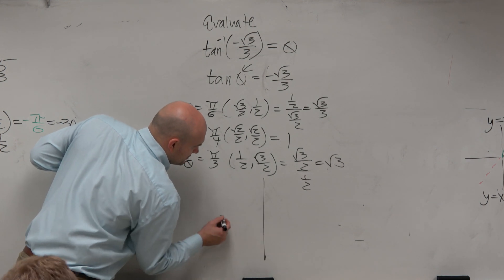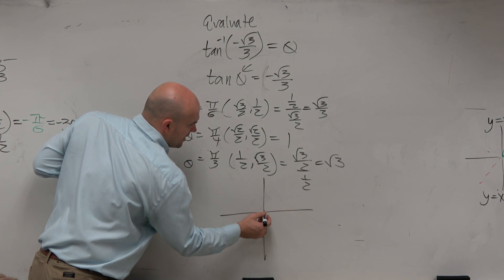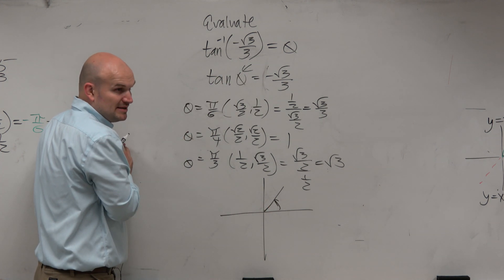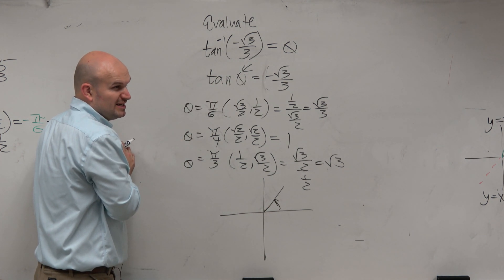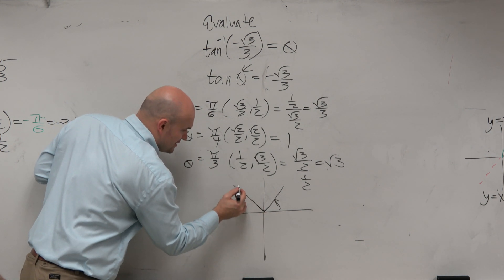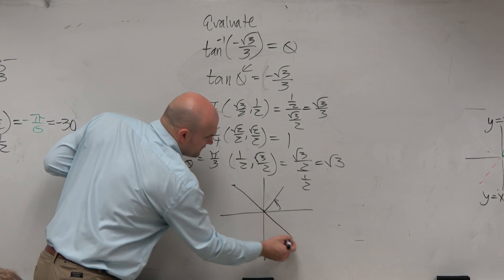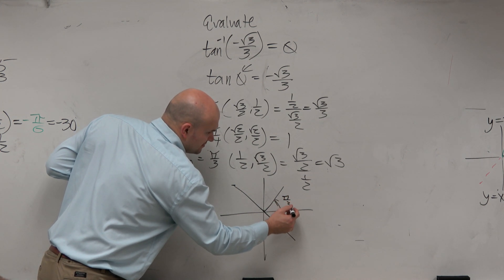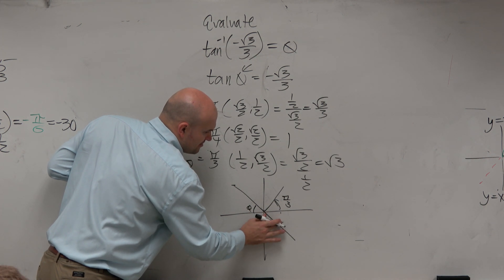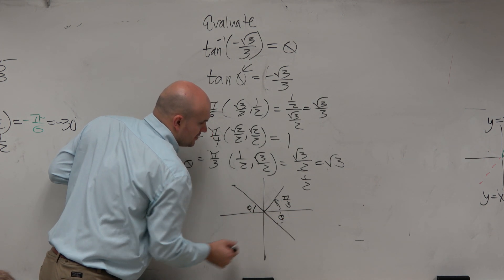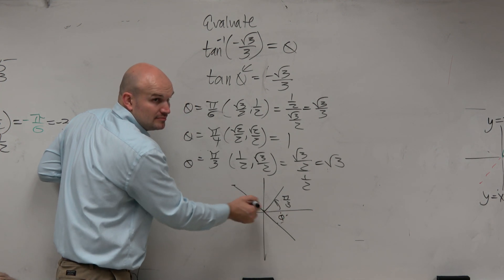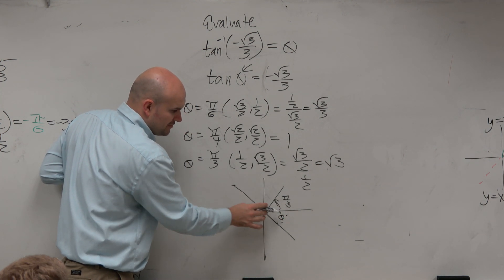So we go and look at our unit circle. And we say, all right, there's pi over 3. It has to be negative, though. So therefore, it has to be in the, when is tangent negative? Second quadrant and fourth quadrant. Same reference angle. Reference angle is pi over 3, right? All these angles have the same angle. That's pi over 3, that's pi over 3, that's pi over 3.